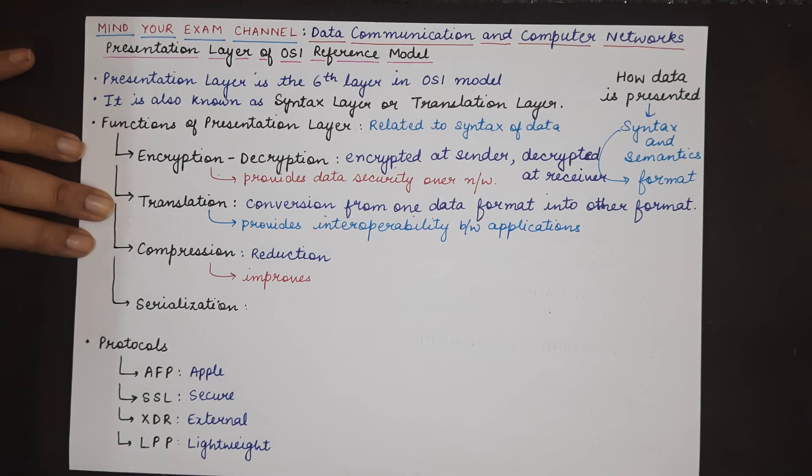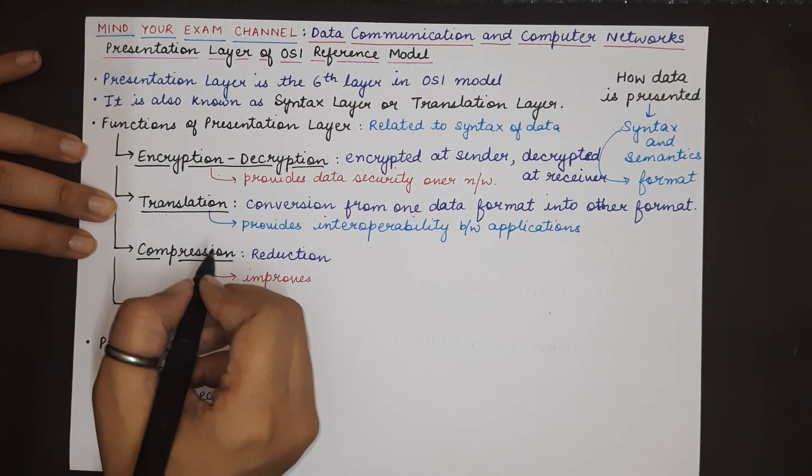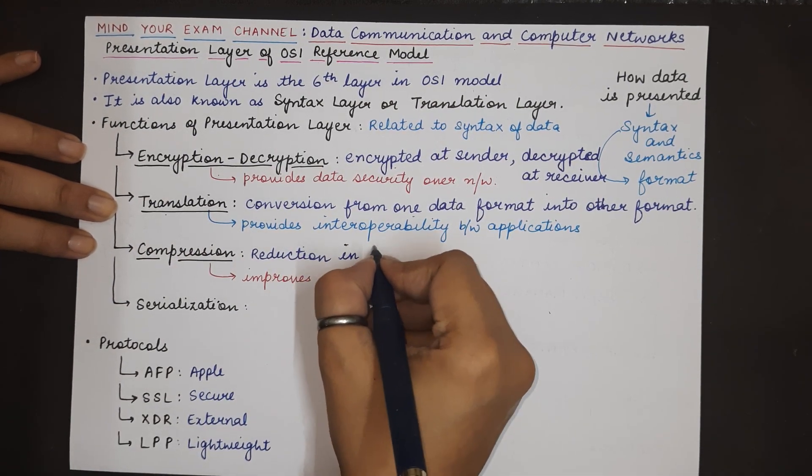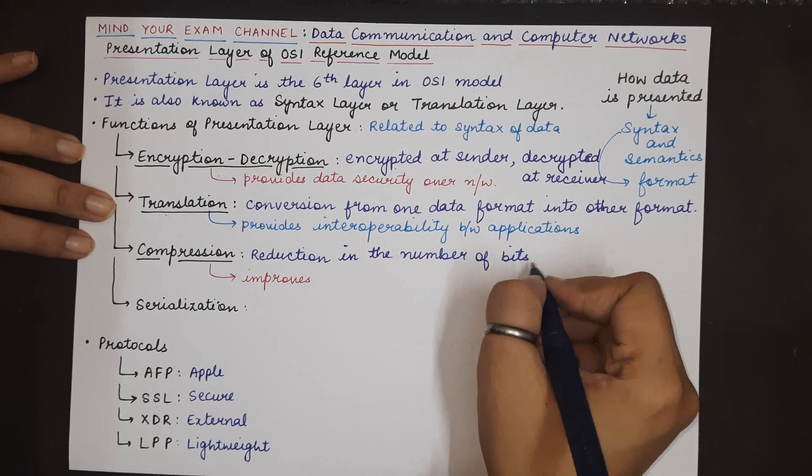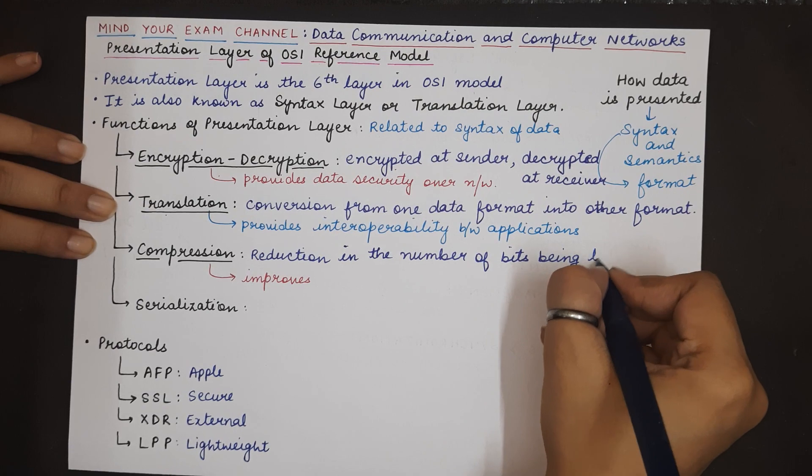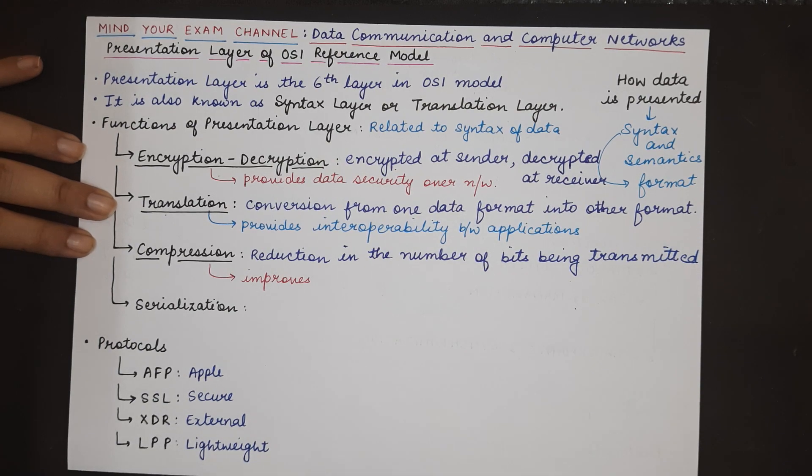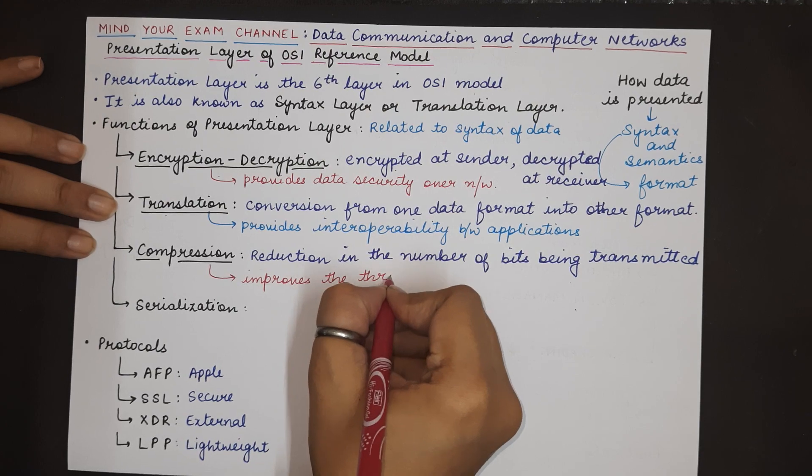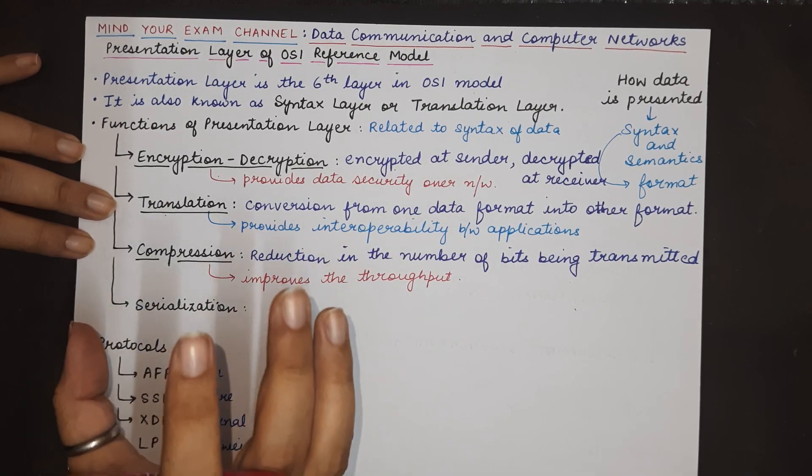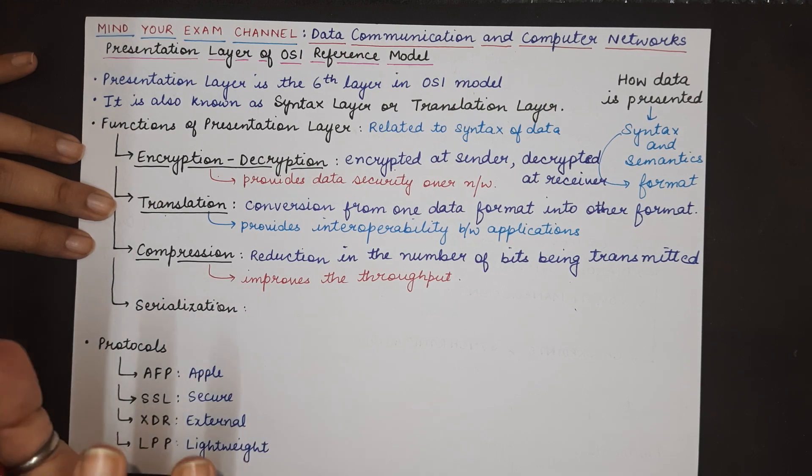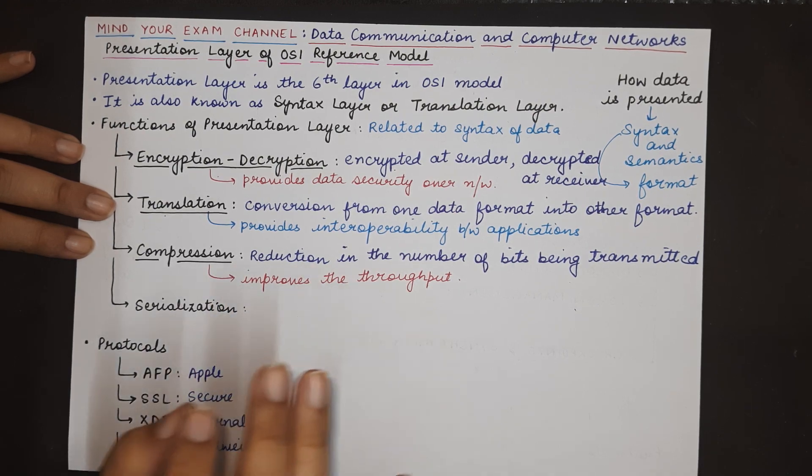The next functionality of the presentation layer is compression. Compression basically means the reduction in the number of bits that are being transmitted, reduction in the number of bits or in the size of the data that is being transmitted. This reduction is important because it increases the throughput of the communication or the channel. It improves the throughput of the channel and allows for faster and quicker transmission. That is why we compress the data without affecting the quality or the value, the content of the data and then we try to transmit it in lesser number of bits by preserving the information.